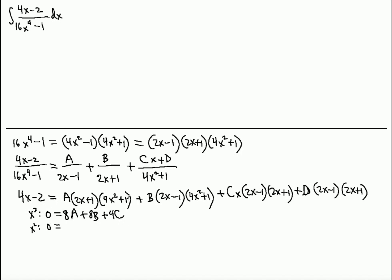Continuing with x²: we have 4A - 4B from the A and B terms. C doesn't participate in x², and D contributes +4D. So the x² equation is: 0 = 4A - 4B + 4D.